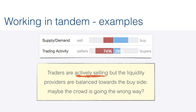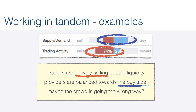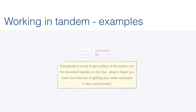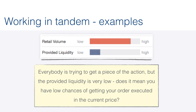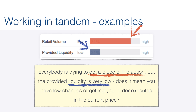Traders are actively selling, but the liquidity providers are balanced towards the buy side — maybe the crowd is going the wrong way. In another instance, we see retail trader volume is very high, but provided liquidity is low. This highlights risks that there's little liquidity, and ultimately orders may not be executed at favorable prices.